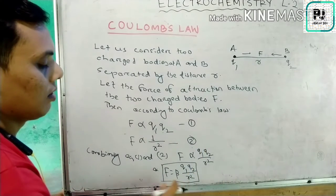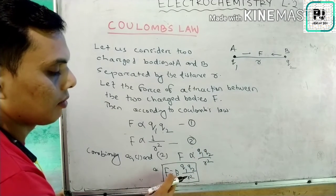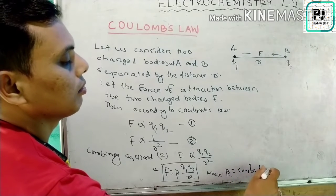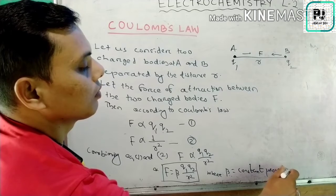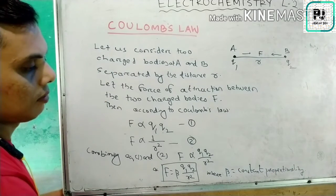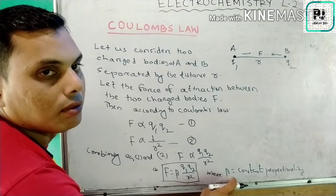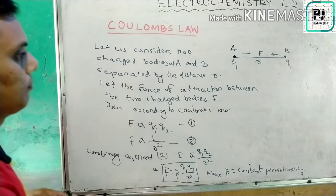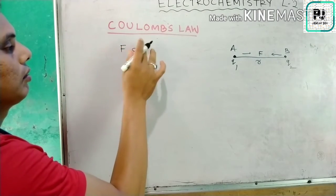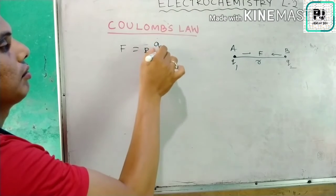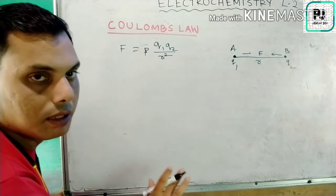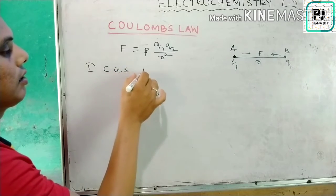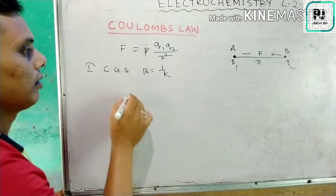Here, beta is the constant of proportionality. This constant has both SI and CGS values. In CGS, beta has the value 1 over k, so the formula becomes F equals 1 over k times q1 times q2 divided by r squared.